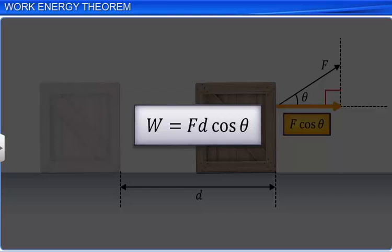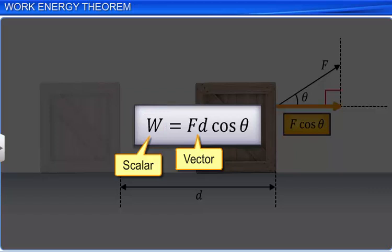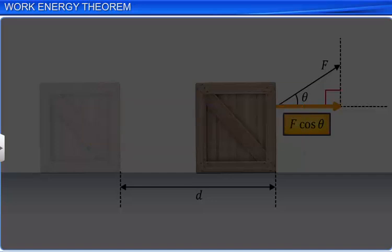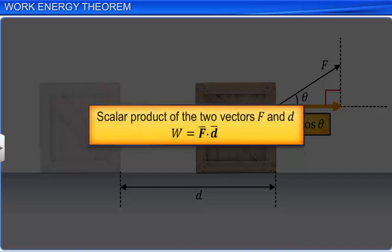In this expression for the work done, both F and D are vectors, whereas the product — work done — is a scalar. Thus, this quantity F cosθ is called the scalar product of the two vectors F and D. In vector form, it is denoted by a dot in between the two, written as F dot D. Hence, it is also referred to as the dot product.